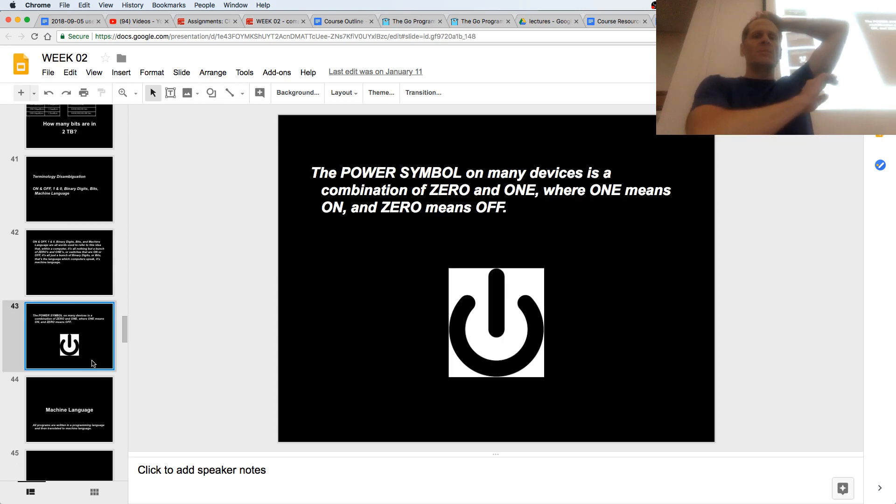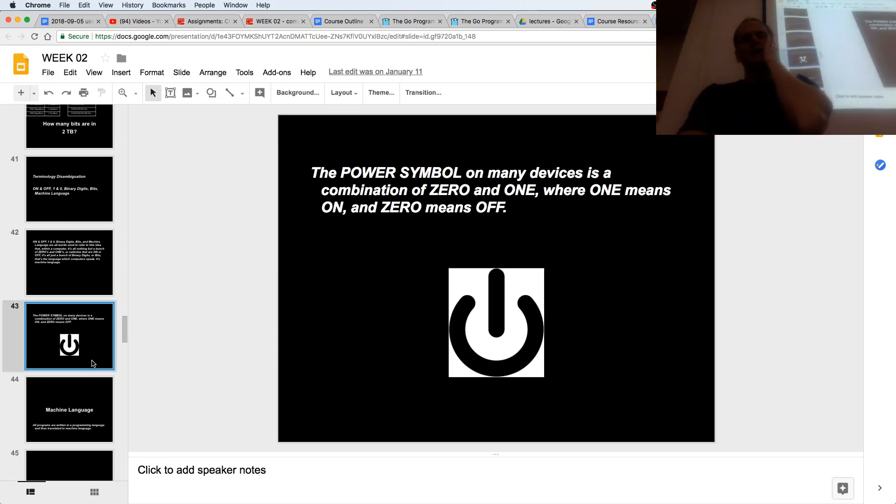And this symbol is a combination of 0, 1, it's the power symbol, it's the on off switch. Zero is off, one is on, you see the zero and the one in it. So even that power symbol is getting back to the fact that computers run on electricity, electricity can be on or off. We represent on off states as zero and one. Zero is off, one is on. It's pretty cool, right?